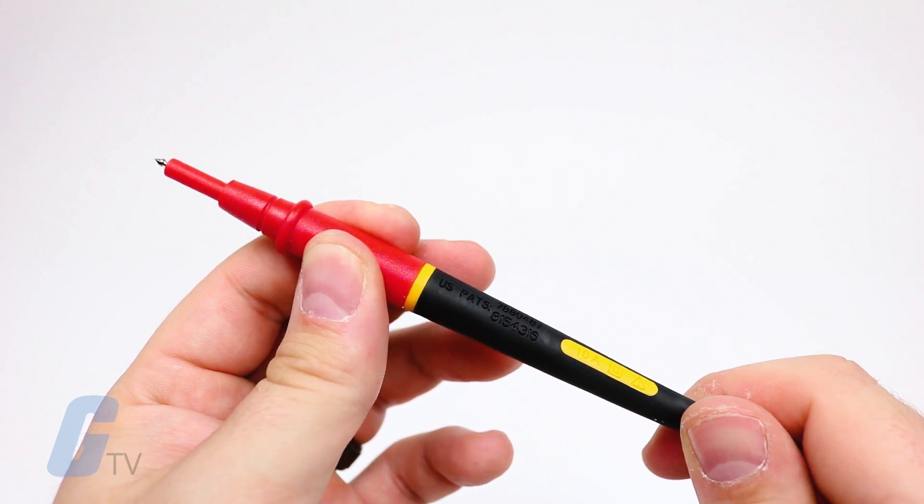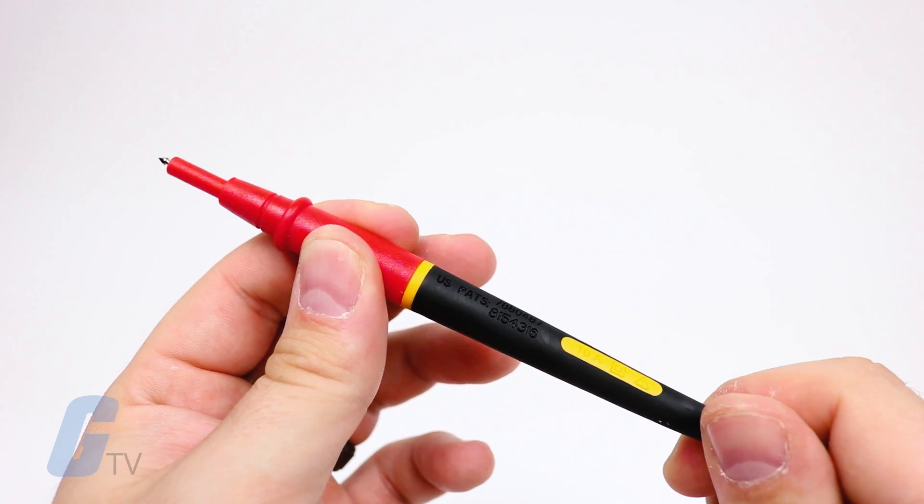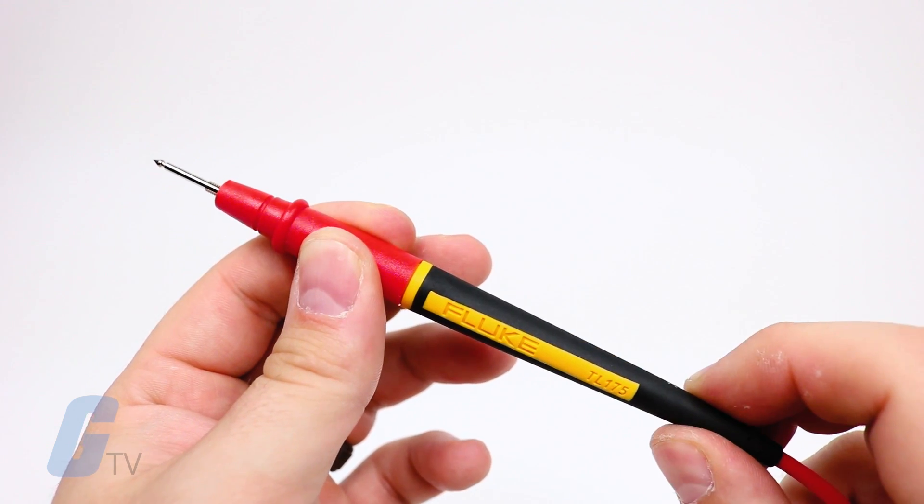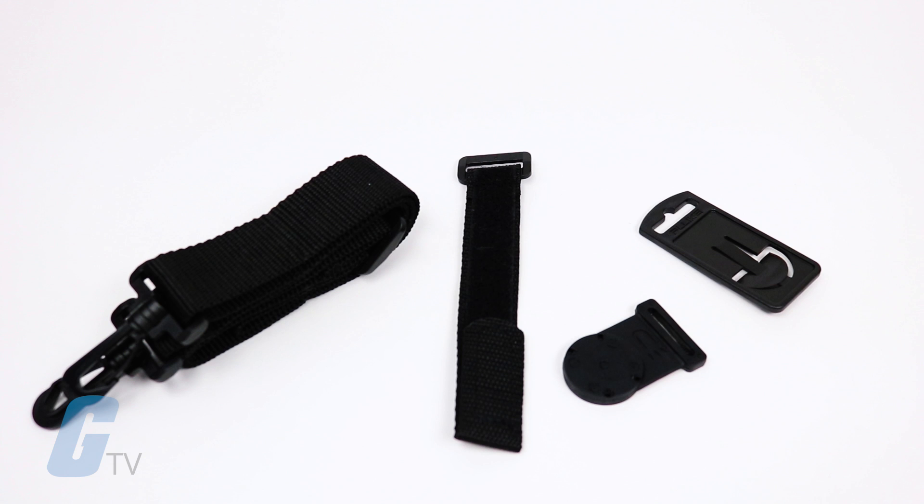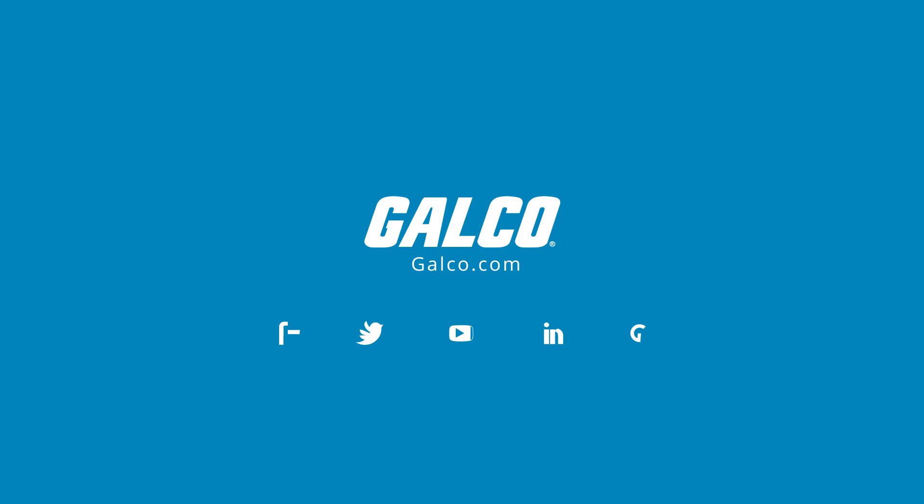Also included in this kit is a set of Fluke TL175 Twist Guard Test Leads and the Fluke Tool Pack Magnetic Meter Hanging Strap. For more information, please visit us at Galco.com.